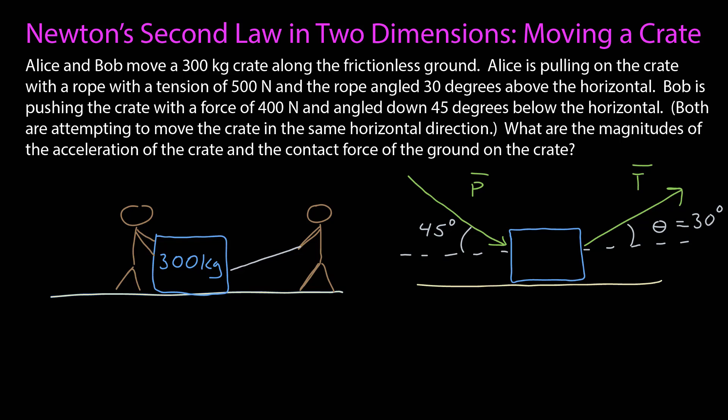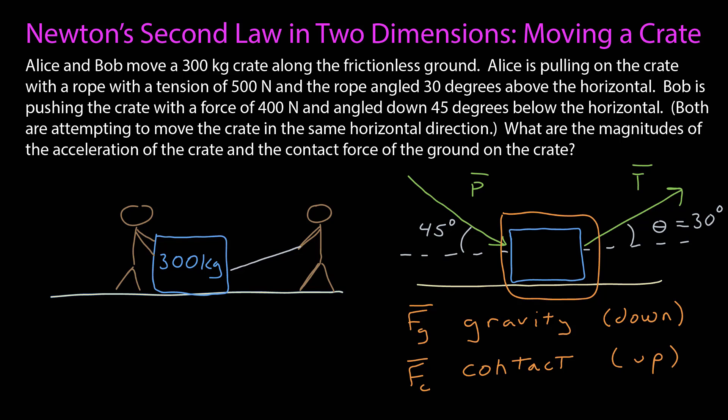I want to apply Newton's second law to this problem, which means I have to choose an object and find all the forces on that object. Let's choose the crate, but we still need to find the rest of the forces. I draw a circle around my crate — what are the forces that cross that boundary? It's the pushing force and the tension force. The only other force is from the ground: there's gravity, which acts at a distance, and there's the contact force of the ground on the crate. Since there's no friction, there is no horizontal component of the contact force, so the contact force has to be pointing up.